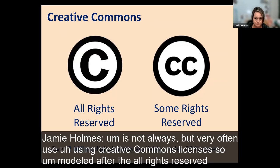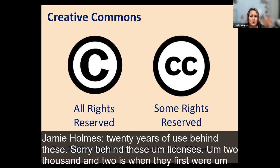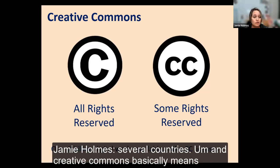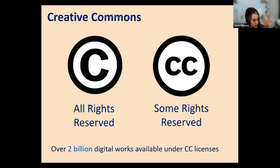How all this is done is, very often, using Creative Commons licenses. Modeled after the 'all rights reserved' copyright symbol, Creative Commons is the smaller CC — 'some rights reserved.' It's important to note there are over 20 years of use behind these licenses. 2002 is when they were first debuted and shared. They're used worldwide and recognized in several countries. Creative Commons basically means: I'm the copyright holder, I'm releasing this to you, and you're allowed to do certain things with this material — and I set those permissions with the specific CC license I choose.